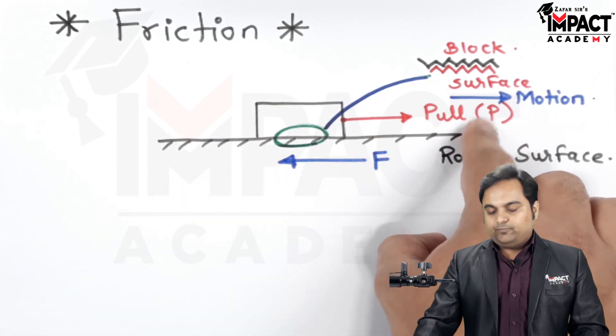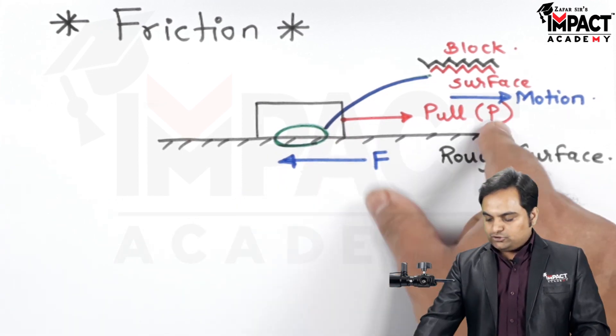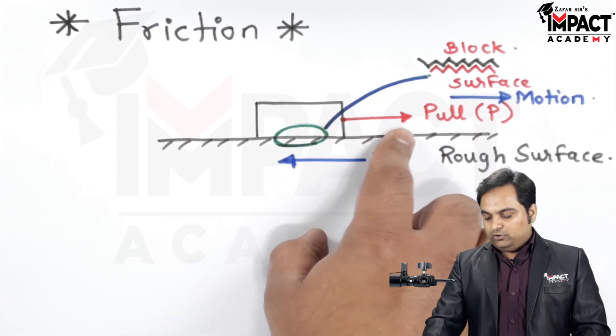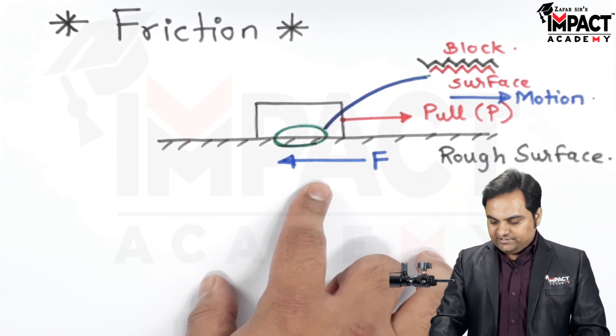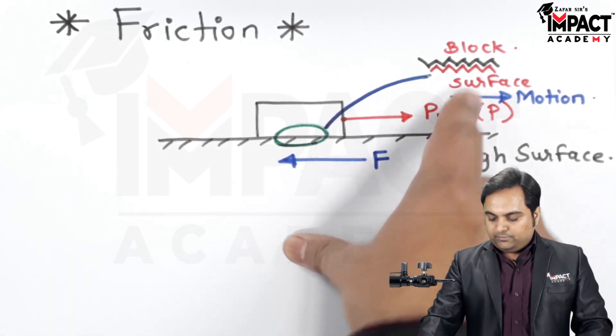It means the amount of pull which is required would go on increasing considerably and proportional to it is the friction force. If we increase this pull the friction force also increases and there will be sliding friction between both the block and the surfaces.